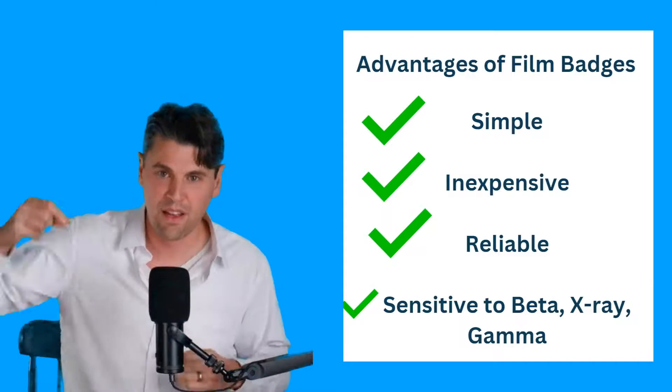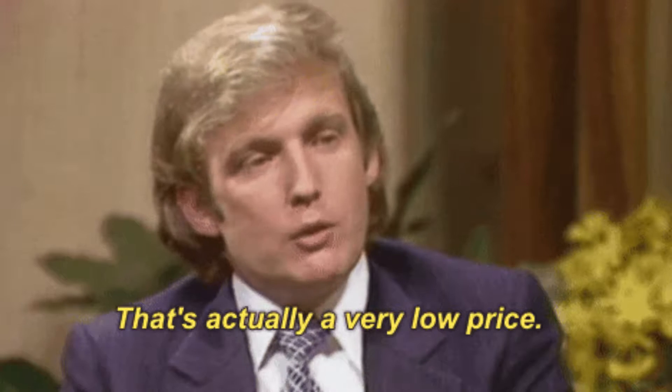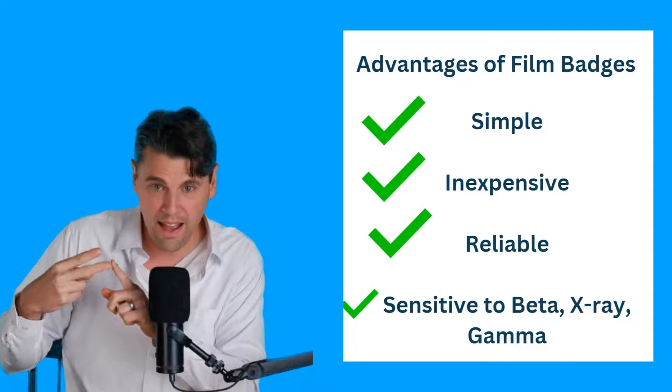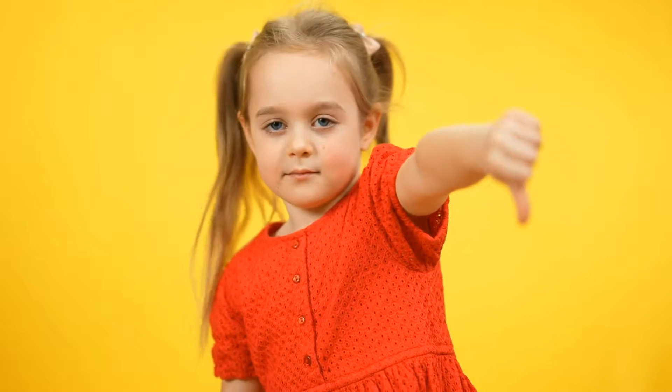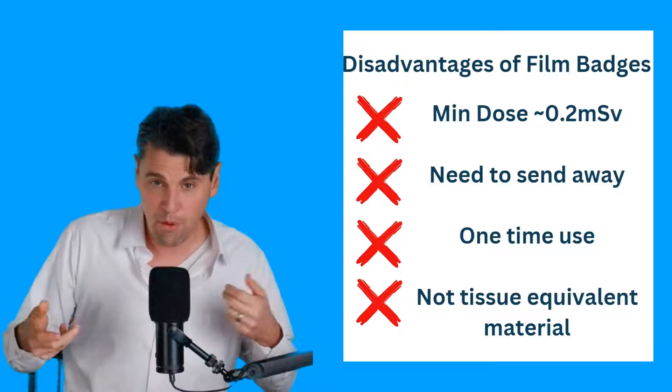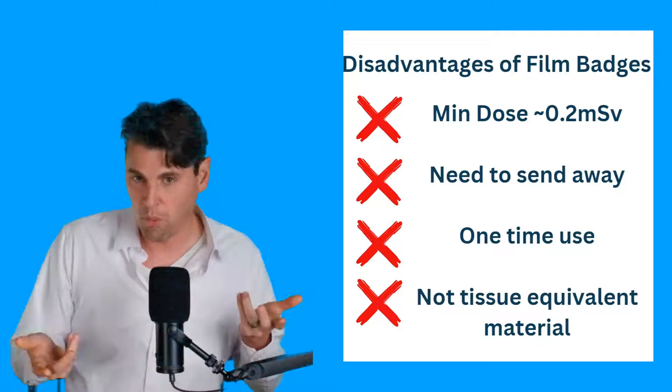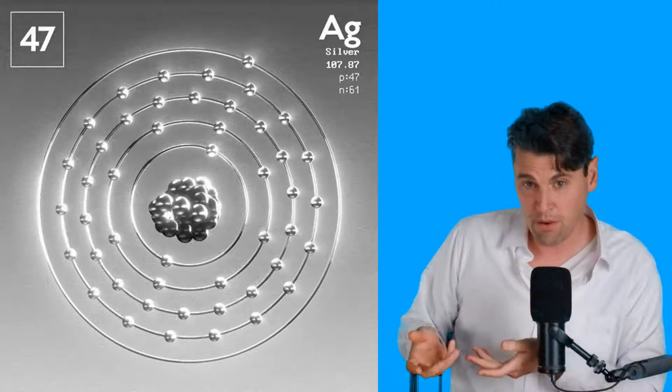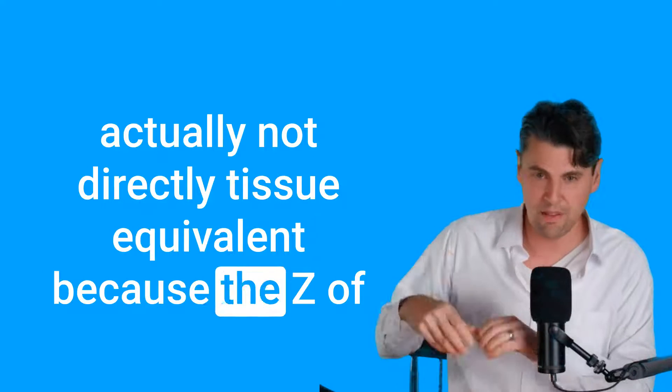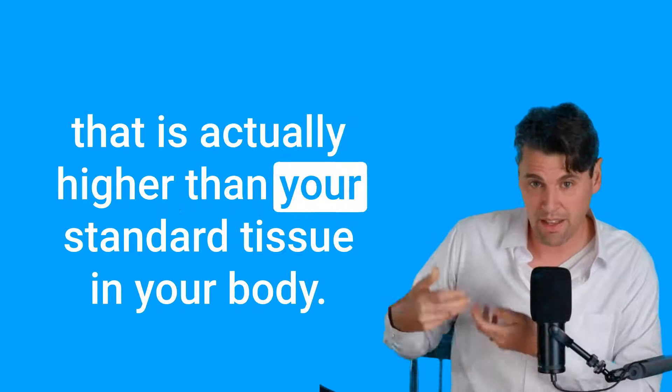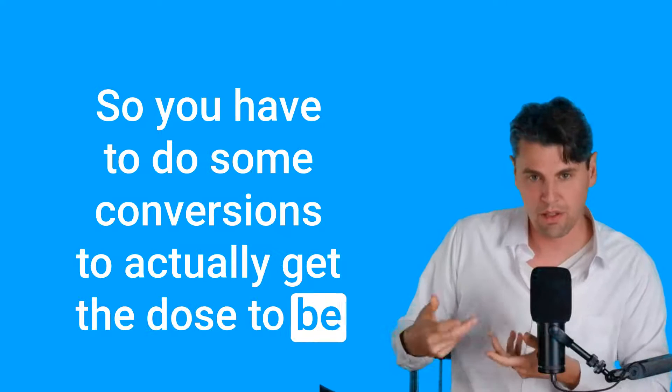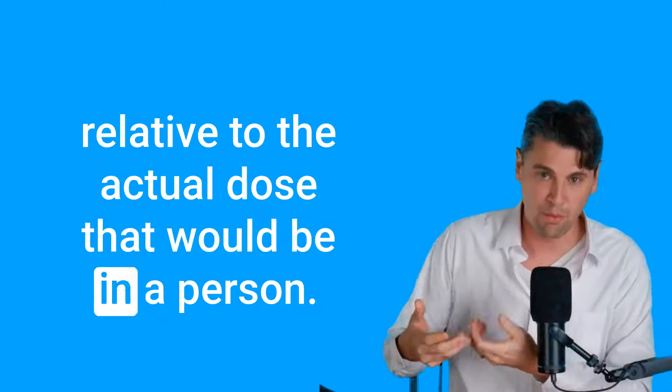Advantages of the film badges, they're simple, they're inexpensive, they're reliable, and you can make them sensitive to all those different beta x-ray and gamma, like we talked about. And disadvantages is that they're not good at measuring extremely low doses, you need to send them away to do the film processing and to do the measurements. They're a one time use. And because it's actually silver in the film that you're looking at the interactions with, it's actually not directly tissue equivalent, because the Z of that is actually higher than your standard tissue in your body. So you have to do some conversions to actually get the dose to be relative to the actual dose that would be in a person.